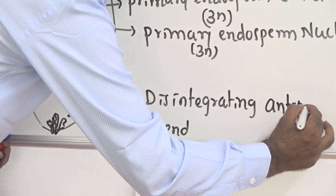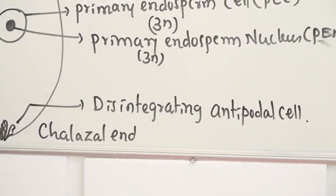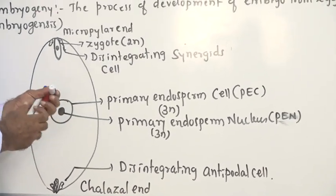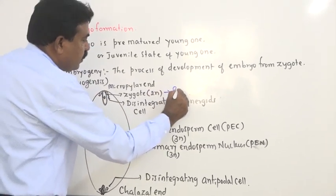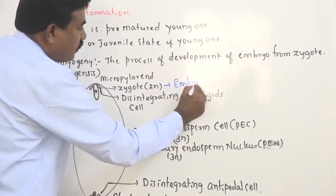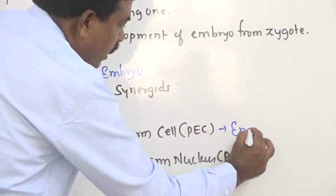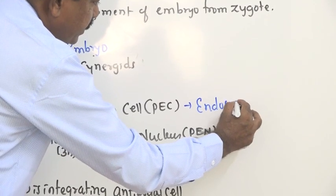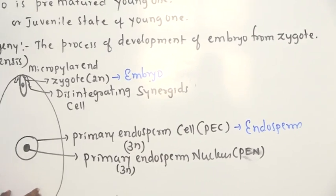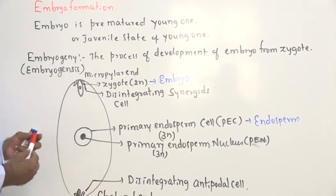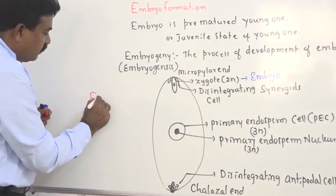After fertilization, the zygote becomes the embryo, and the primary endosperm cell becomes the endosperm which nourishes the embryo. The rest of all the cells present in this embryo sac undergo disintegration. Hence it is the fertilized embryo sac.